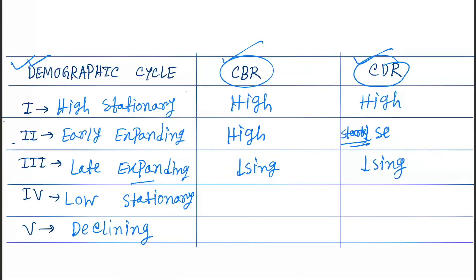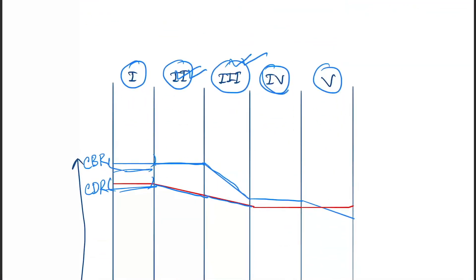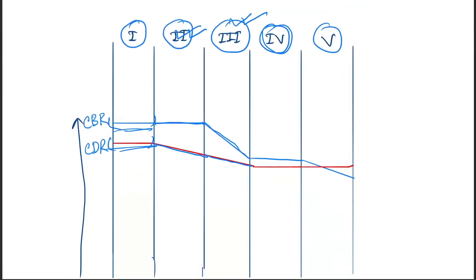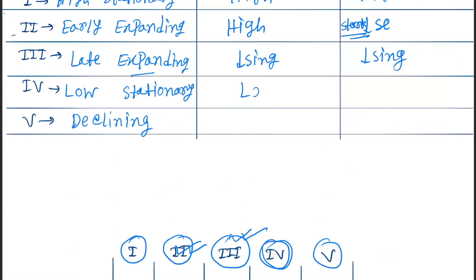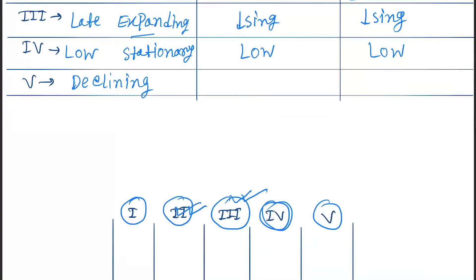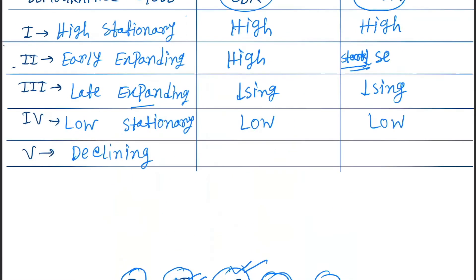In the low stationary phase — phase four — both CBR and CDR became low. In the declining phase — phase five — CDR now becomes greater than CBR.